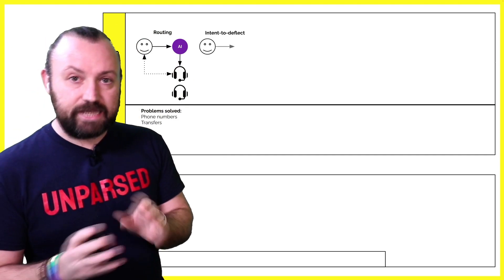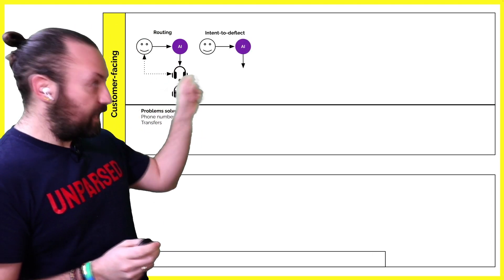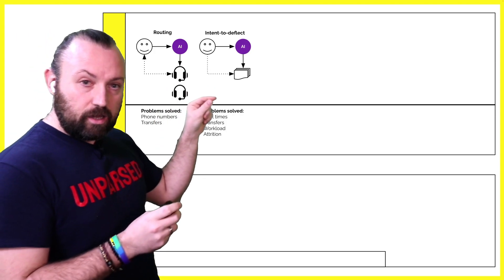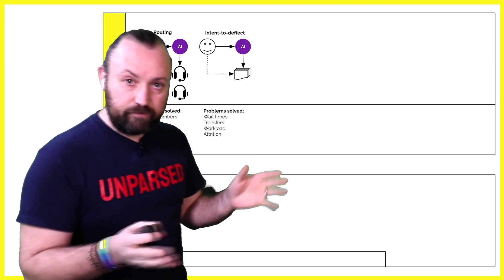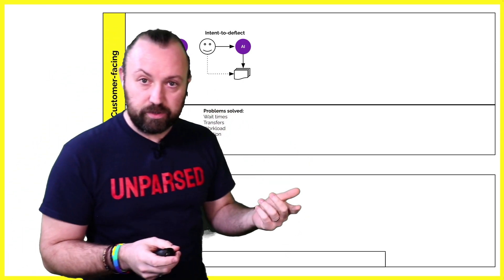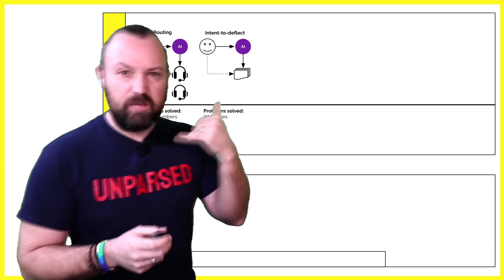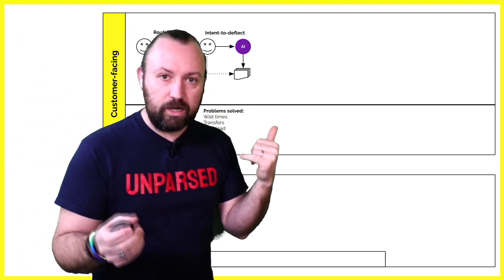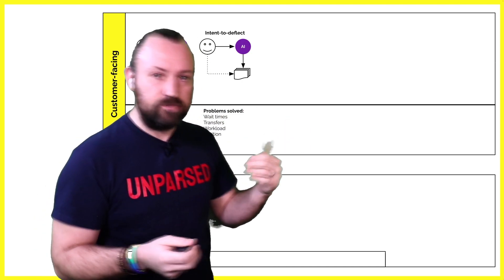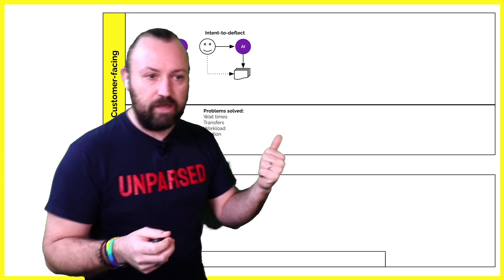Another use case is what I call intent to deflect. That's where the customer calls, the AI recognises what they've said, and then using the resources and channels that you already have, it will deflect the user to the appropriate channel. So if you're calling to change your address, you're better off doing that online because we've got an online form that does that and 95% of users that fill it in complete it successfully. So there's the web address — I'm going to text you a link, go and resolve your query there.